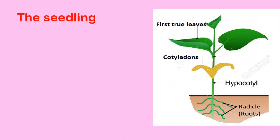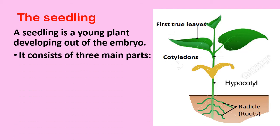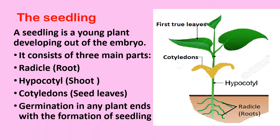A seedling is a young plant developing out of the embryo. It consists of three main parts: radicle, hypocotyl and cotyledons. Germination in any plant ends with the formation of a seedling. The roots of the seedling absorb water and minerals from the soil. The leaves start manufacturing food for the young plant, which keeps growing and becomes a mature plant and produces flowers and seeds.